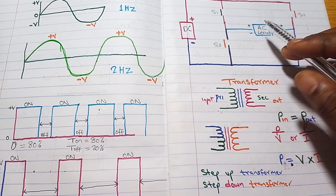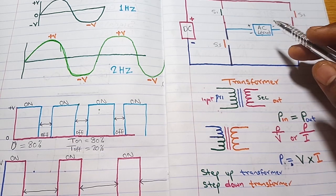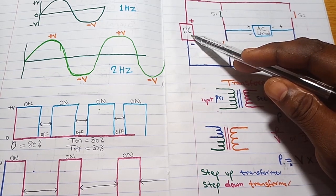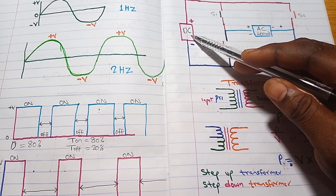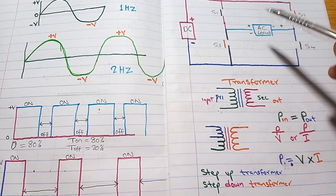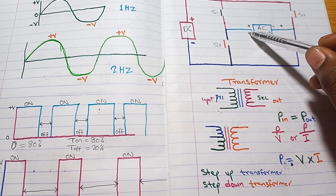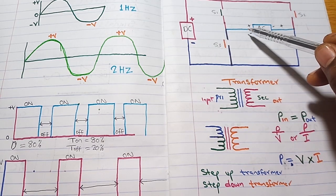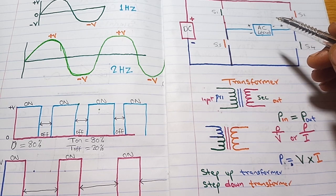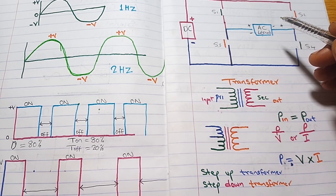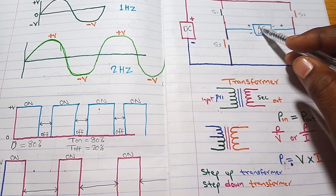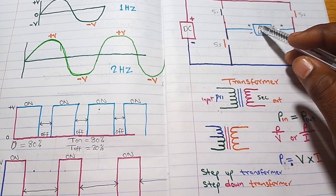After explaining how an inverter converts DC to AC, there is a problem in this circuit that if we ignore, we might not get what we need. The problem is the voltage — we are making use of 12 volts DC, and after being converted to AC, it will still be 12 volts AC. But most of our home appliances operate at 120 to 220 volts AC.